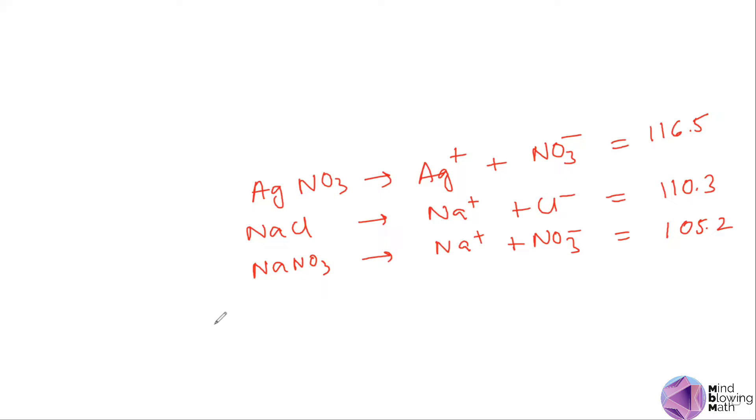We need to find the conductivity of Ag+ and Cl-, which is AgCl molar conductivity. So this is simply formula manipulation. We can take equations and add them, subtract them, and solve quickly. We need to get Ag+ and Cl- together.